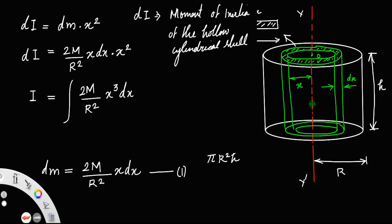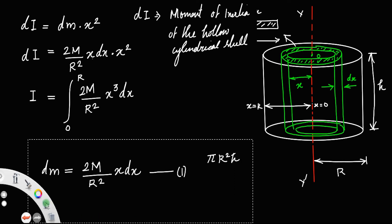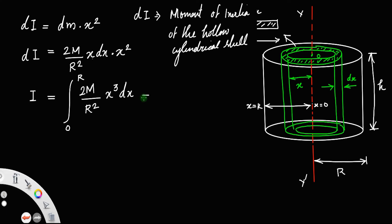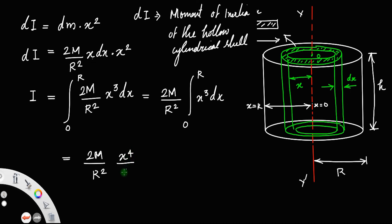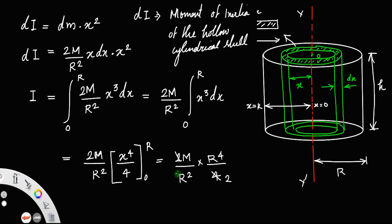Since the variable is x, x can vary from 0 to r. To get the total moment of inertia, integrate: I = (2m/r²) ∫₀ʳ x³ dx. The integral of x³ equals x⁴/4, evaluated from 0 to r. Substituting the limits: I = (2m/r²) × (r⁴/4). Cancelling r² gives r², so the answer is I = mr²/2.